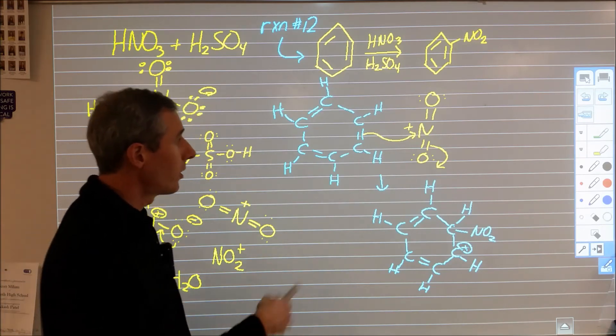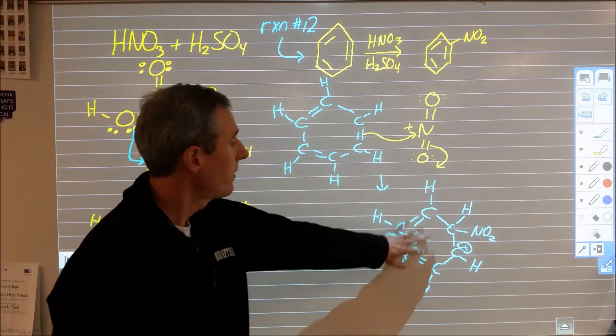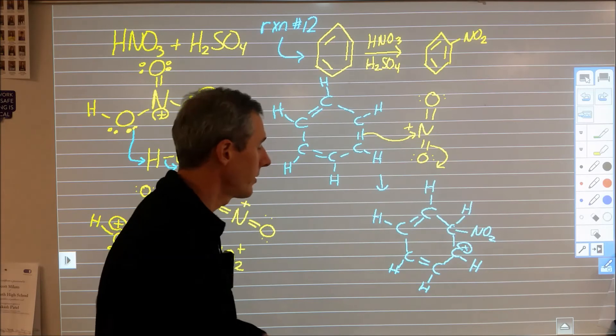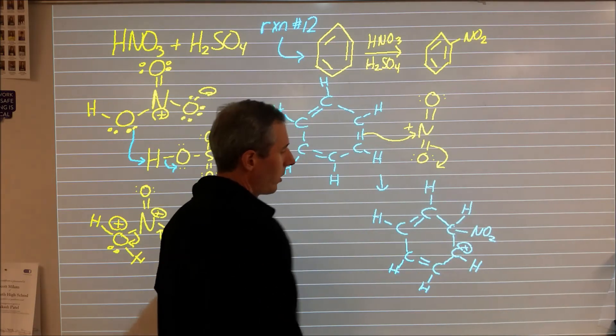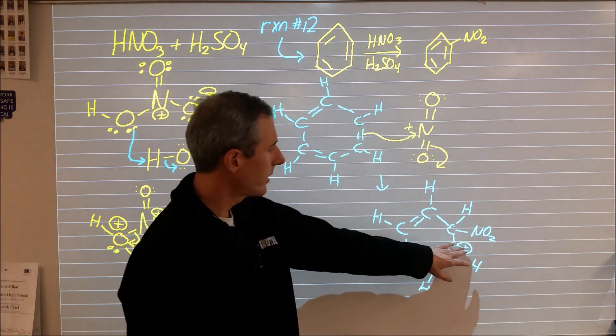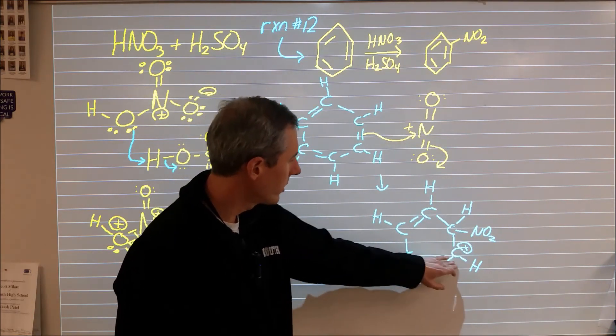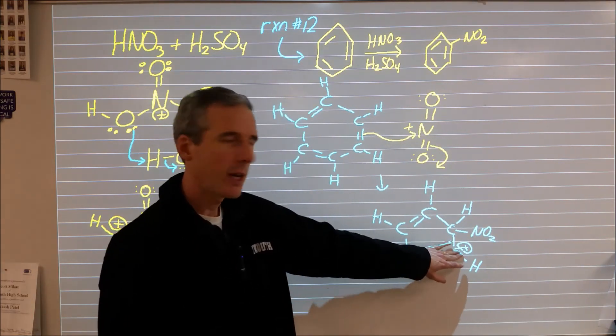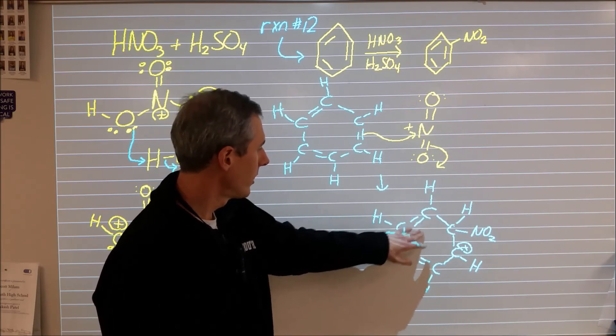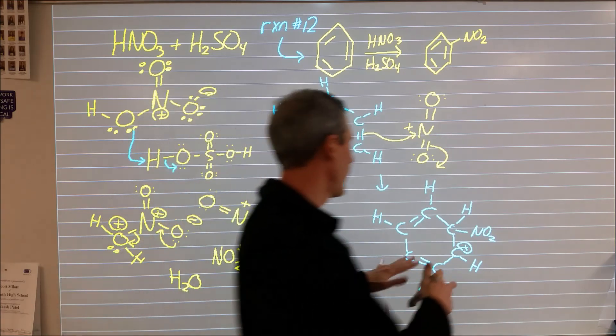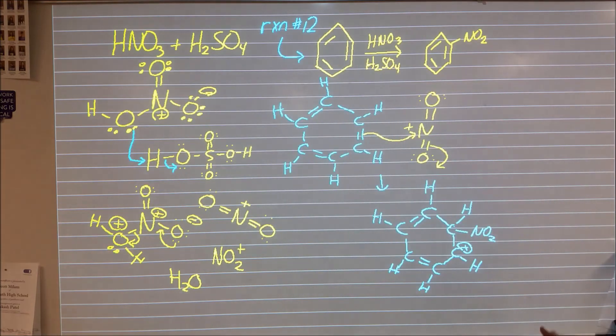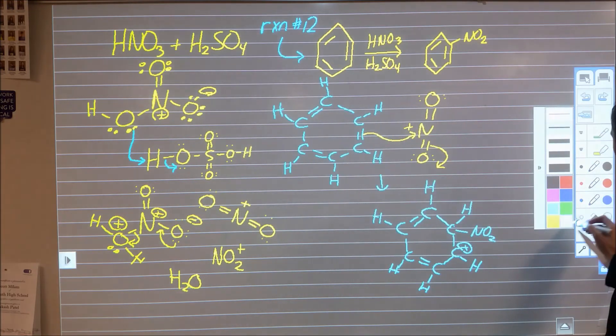From there to reform the benzene type structure where we have the alternating double bonds we need to lose this hydrogen and these electrons are going to form that. But I do want to point out before we get to that this positive charge, these electrons can move here getting rid of the carbocation here and shifting it over here. These electrons can move here moving the carbocation up here and so that positive charge is delocalized over this giving it some stability not as much as a typical benzene.